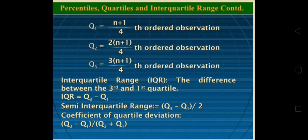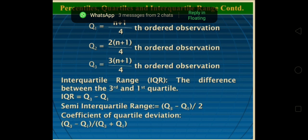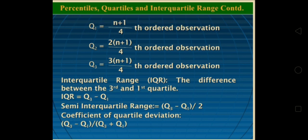Formula for quartile deviation or semi-quartile deviation is (Q3-Q1)/2. For coefficient of quartile deviation: (Q3-Q1)/(Q3+Q1).